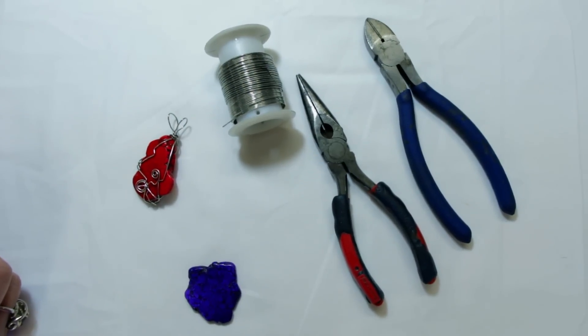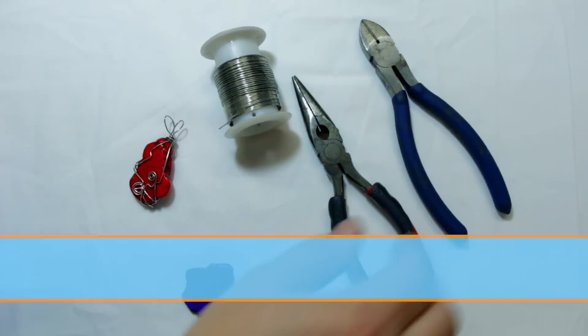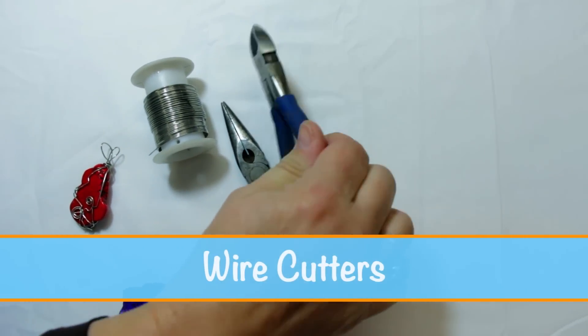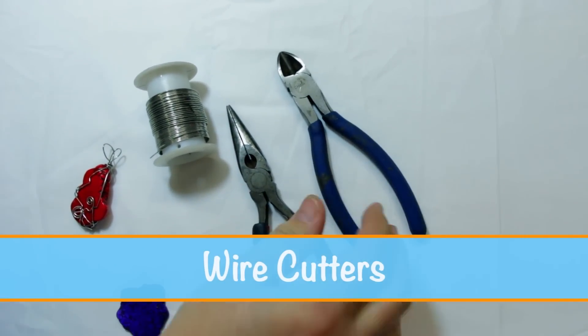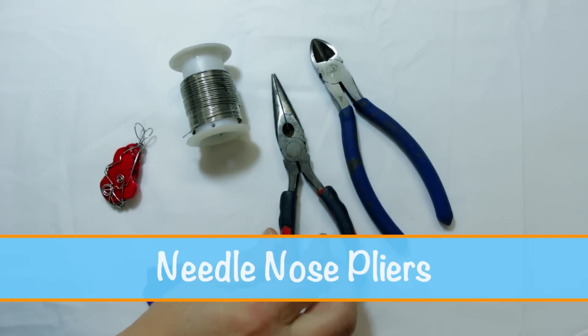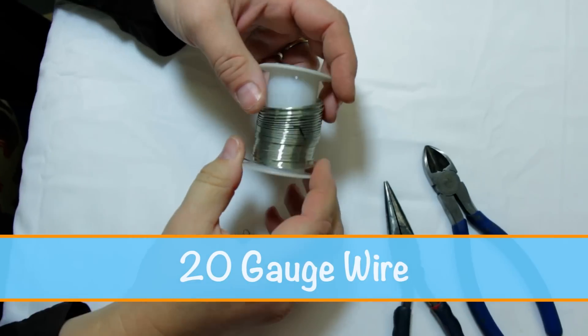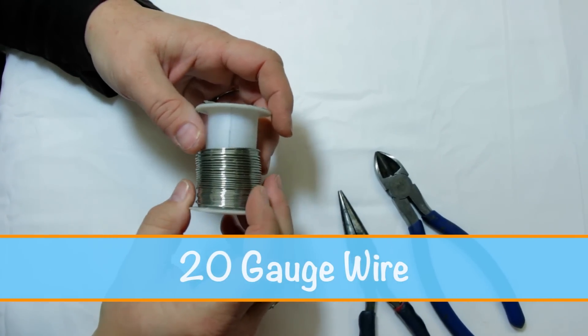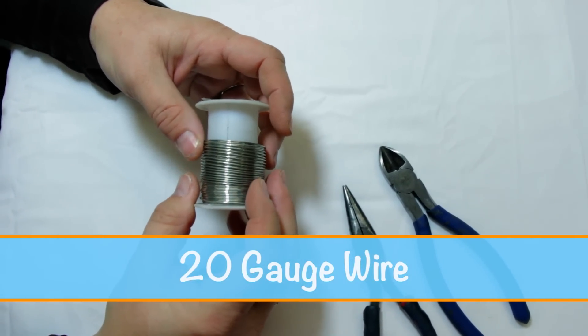And here are the tools that we will be using for this project. You will need a pair of wire cutters. I just use regular tools from the hardware store. That's what I prefer. And needle nose pliers. And we'll use one roll of non-tarnishing silver wire, 20 gauge.